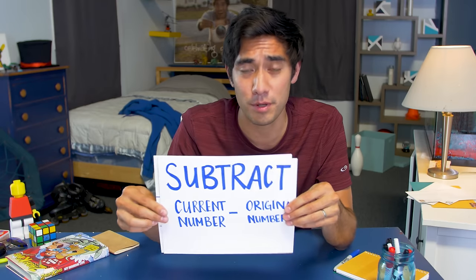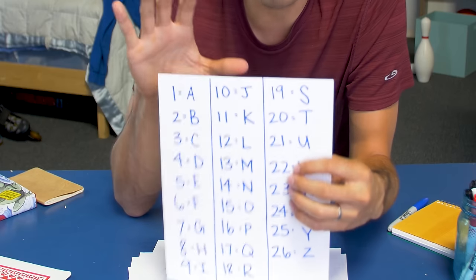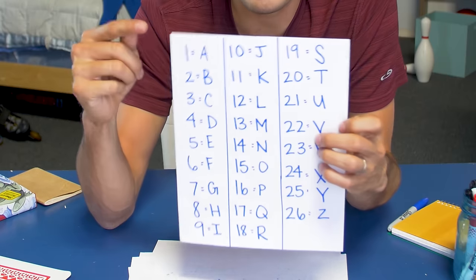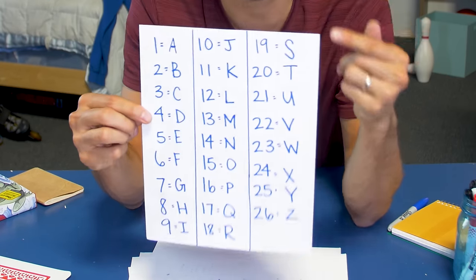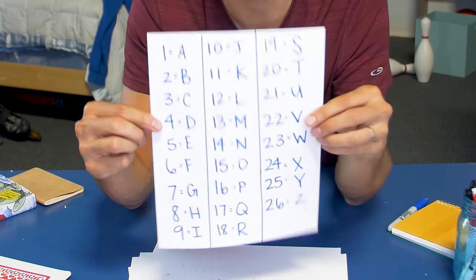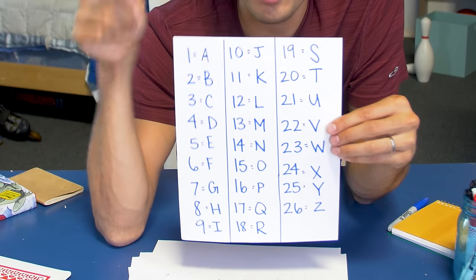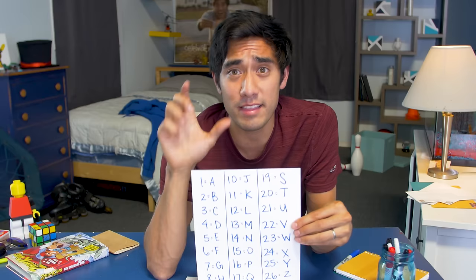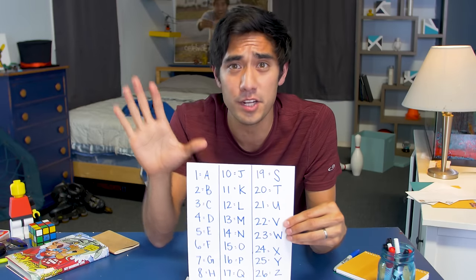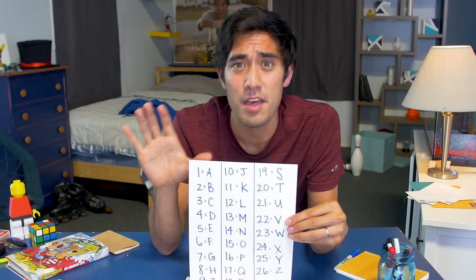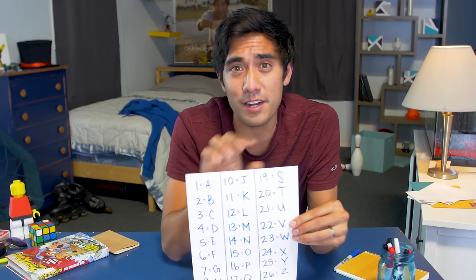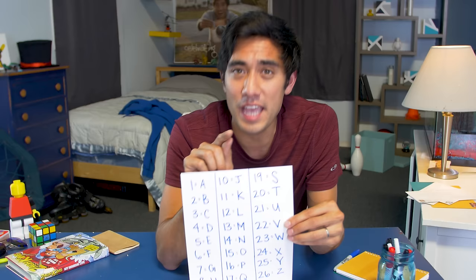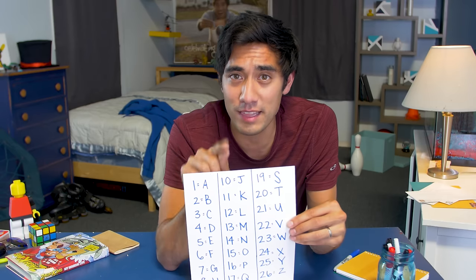That leaves you with an alphabet correlation — the first letter A is number 1, 19 is S. Find the number that correlates with your letter. Take that letter and think of a country that starts with that letter. Now take the second letter in that country's name and think of an animal that starts with that letter.